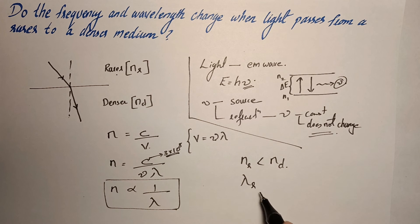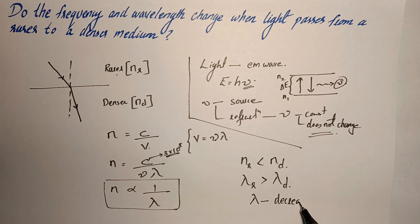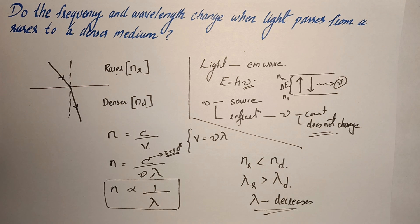Wavelength in the rarer medium is greater than wavelength in the denser medium and it is moving from rarer to denser or from a bigger value to smaller value which means that wavelength decreases when it moves from rarer medium to denser medium.